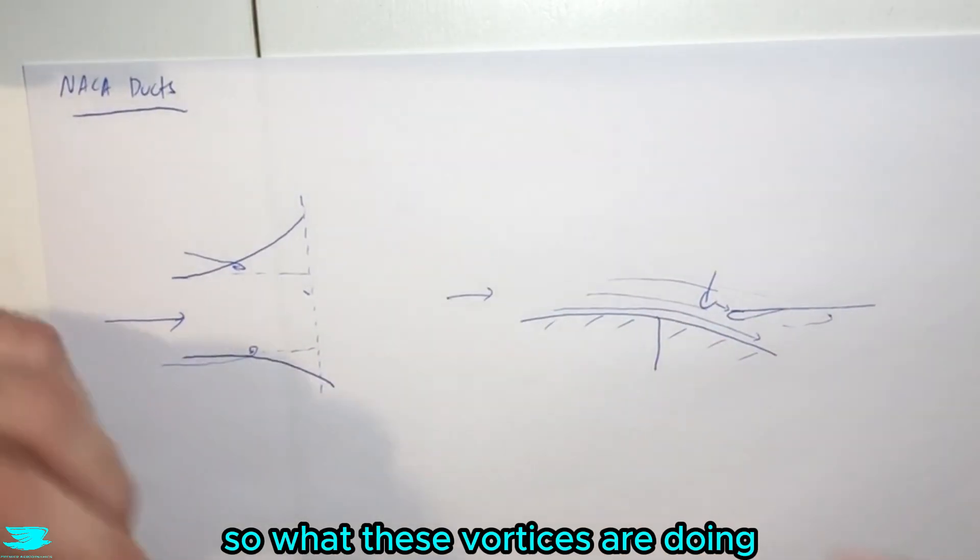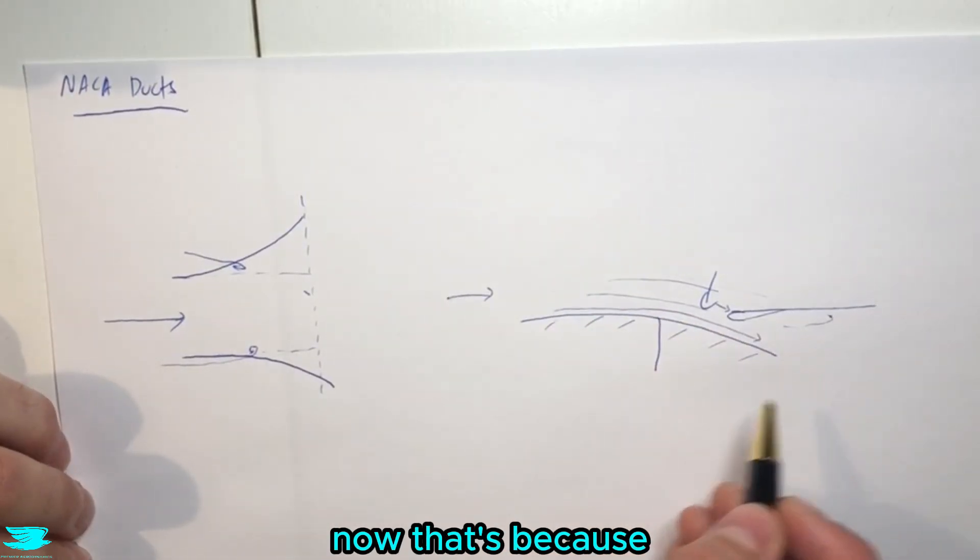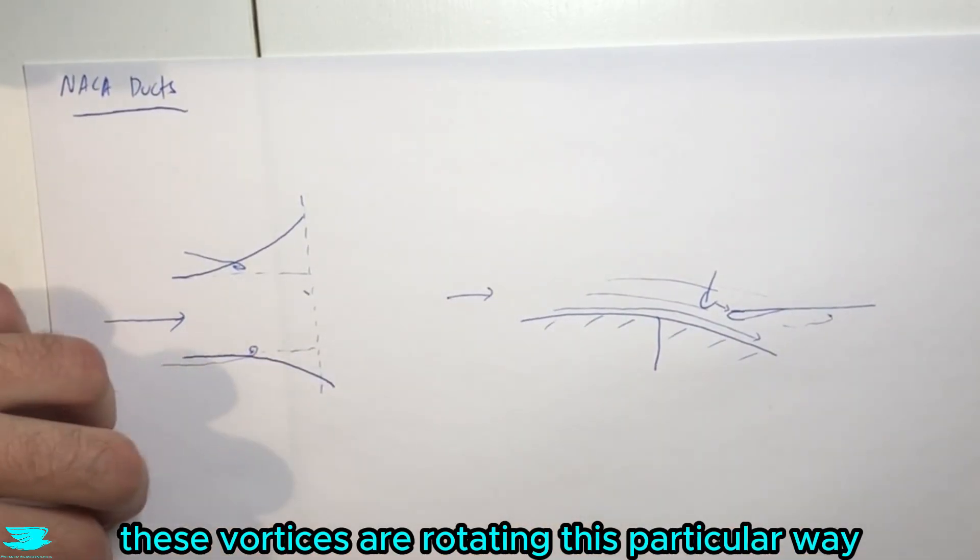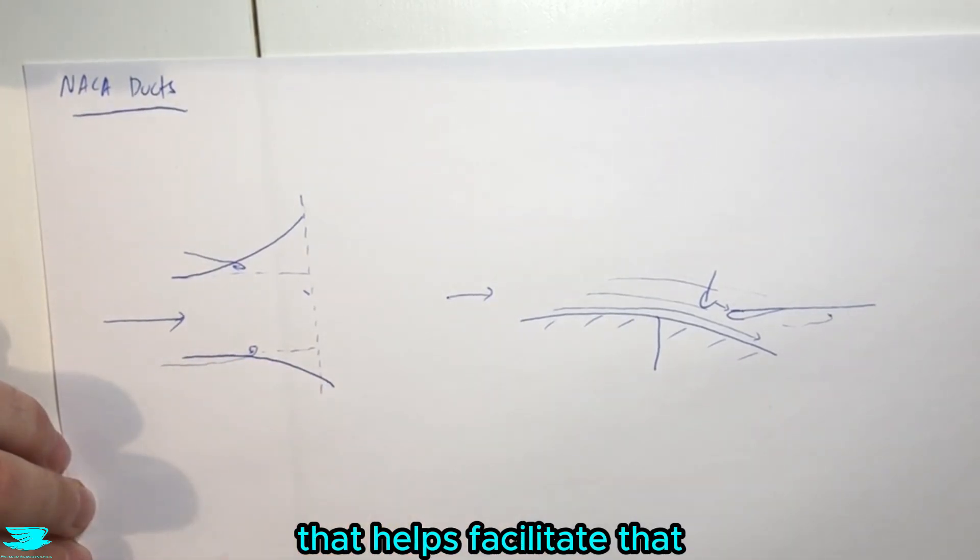So what these vortices are doing is they're pulling more air into this NACA duct and going into the engine now. That's because these vortices are rotating in this particular way. And as the walls curve out more, that helps facilitate that.